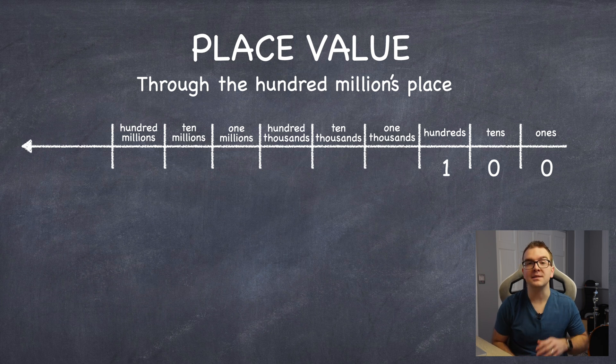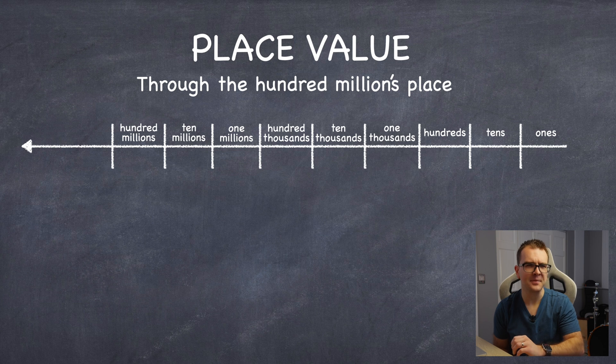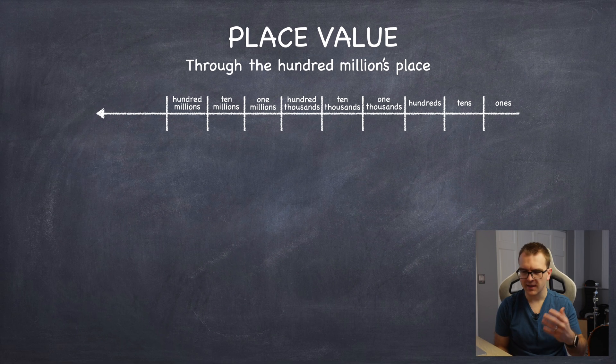Now, each group or box is bigger than the previous one by 10 times, okay? So, 10 ones is 10, 10 tens is 100, and so on.